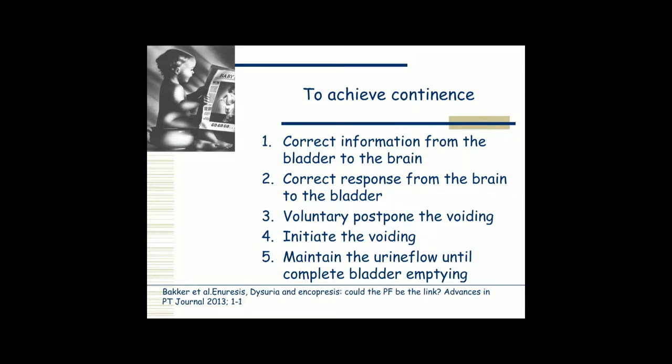In order to achieve continence, the child has to go through different steps. First, he needs to get the correct information from the bladder to the brain, and then the correct response from the brain back to the bladder. He needs to be able to voluntarily postpone voiding, to initiate voiding when it is at a socially accepted time, and to maintain urine flow until complete bladder emptying.